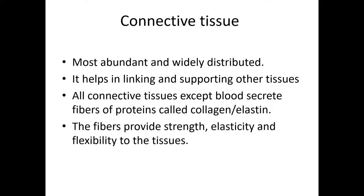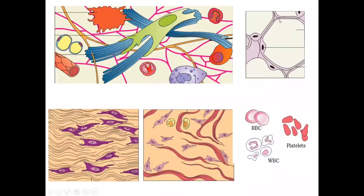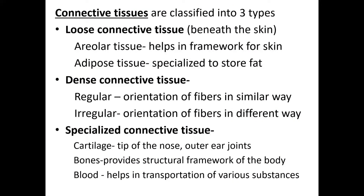Connective tissue is the most abundant and widely distributed tissue. It is used in linking and supporting other tissues. All connective tissues, except blood, secrete fibers of proteins called collagen or elastin. These fibers provide strength, elasticity, and flexibility to the tissue. Connective tissues are classified into three types: Loose connective tissue — found beneath the skin — subdivided into Areolar tissue and Adipose tissue. Areolar tissue provides a framework for the skin, while Adipose tissue is specialized to store fat. Dense connective tissue is divided into Regular (fibers in similar orientation) and Irregular (fibers in different orientations).